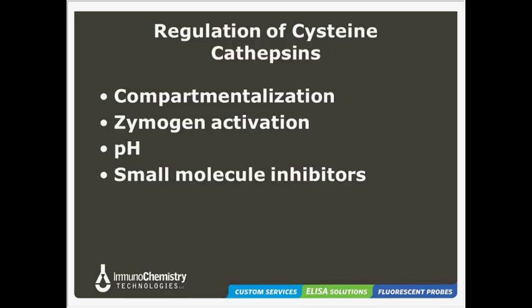Cells use a variety of methods to regulate cysteine cathepsins in order to prevent uncontrolled proteolytic activity, which can be potentially harmful for the cell and surrounding tissues. First, the cell can compartmentalize the cathepsins within the lysosomes or other organelles. Second, the activation of the zymogen — the inactive precursor to the active cathepsin enzyme — is tightly regulated, occurring during passage through the endoplasmic reticulum by removing a signal peptide. pH is another important regulatory factor, as cathepsins necessitate a slightly acidic environment to maintain structural stability. Finally, small molecule inhibitors such as cystatins, thyropins, and serpins can bind competitively and tightly to the cathepsin active sites to prevent their proteolytic activity.